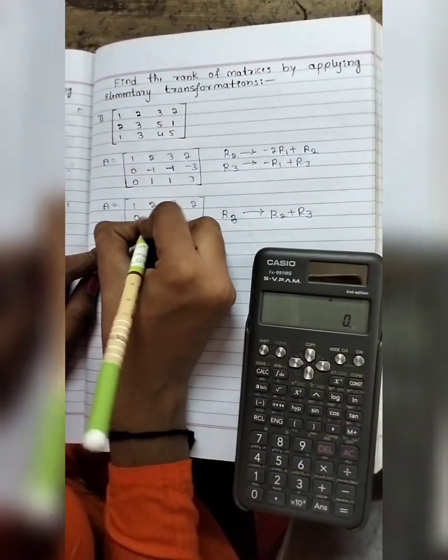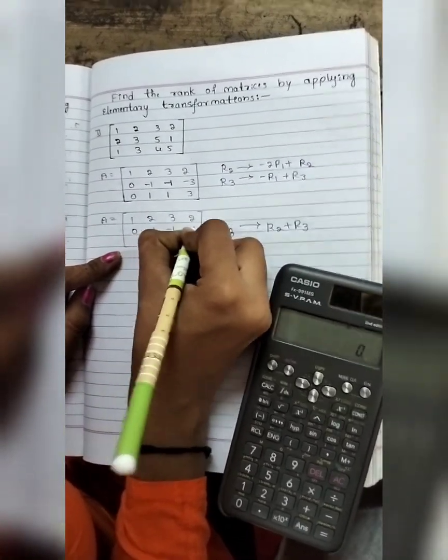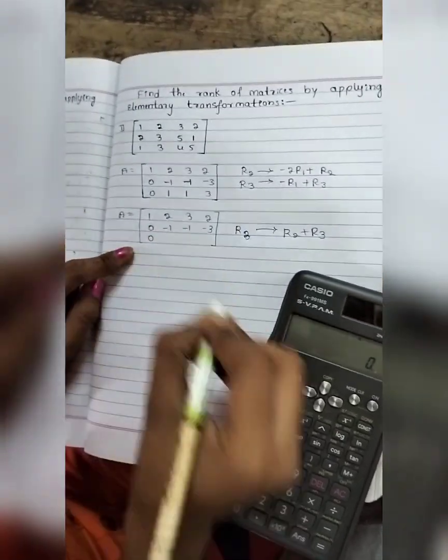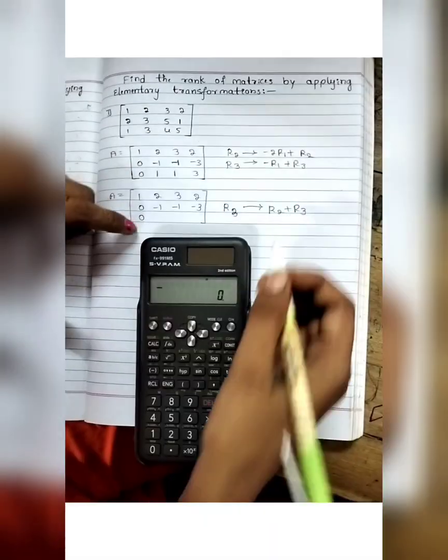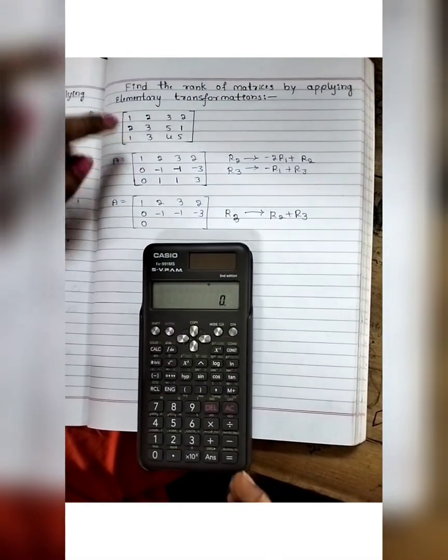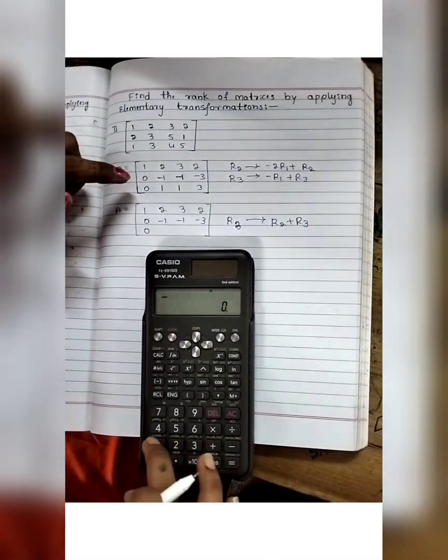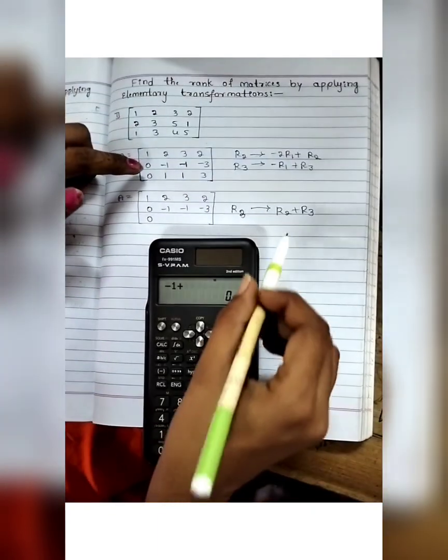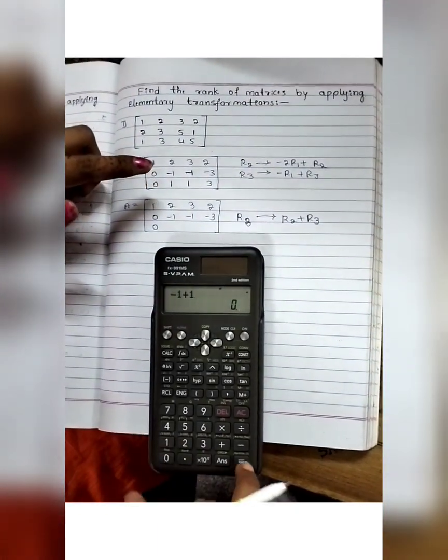Now minus 1, 1, minus 3. R1 and R2 written as is. Next R3. R2 is minus 1 plus R3 is 1, we get 0.